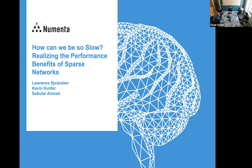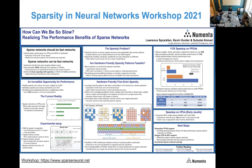I'm going to be giving an overview of a poster presented last week at a workshop. It's somewhat provocatively titled 'How Can We Be So Slow? Realizing the Performance Benefits of Sparse Networks,' and it's co-authored by Kevin Subutai and myself. We presented it at the Sparsity and Neural Networks workshop. The workshop assets are still online on YouTube Live — you can find posters and videos at the URL in the bottom left.